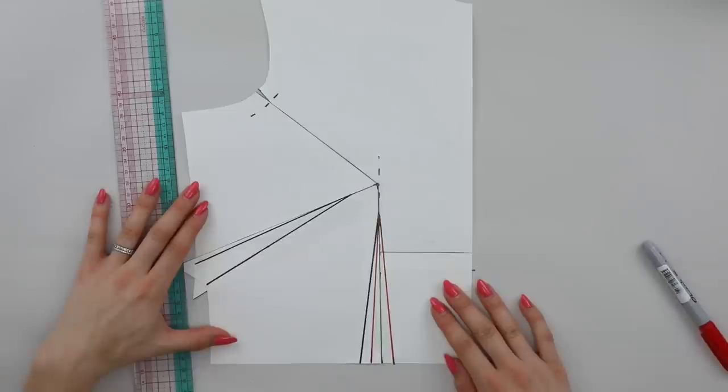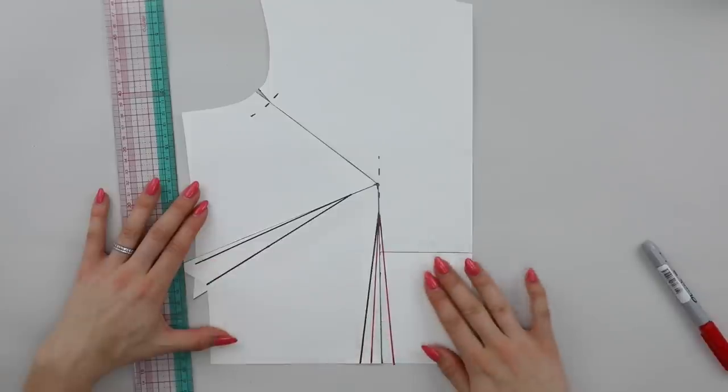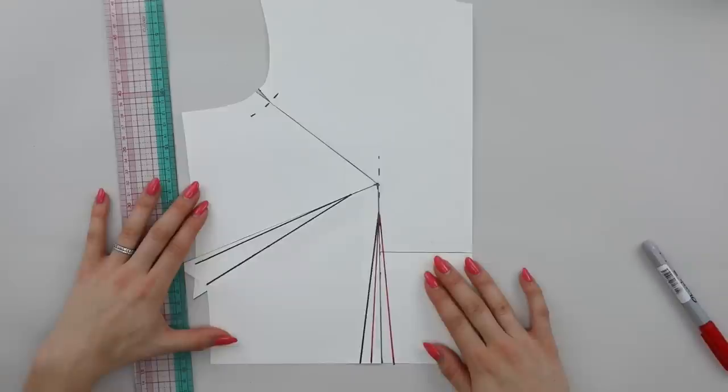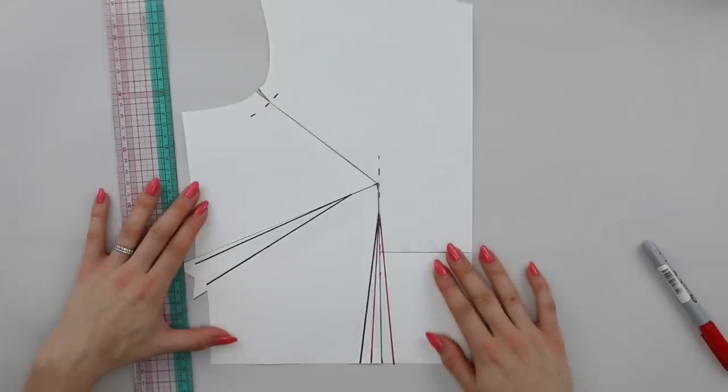Generally speaking, by completing a small bust adjustment you will find that the darts decrease in size, and this generally works better for small busts. Sometimes you may find if you have to do a large SBA that you actually remove the darts altogether from the waist and from the side seam, and that is absolutely fine. You may find that that works best for your individual shape.